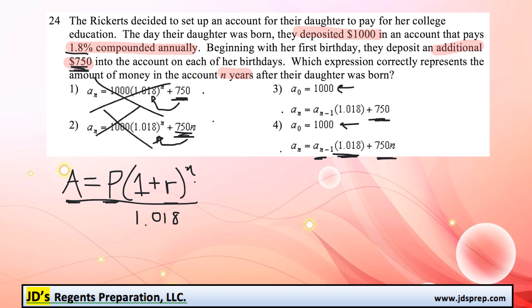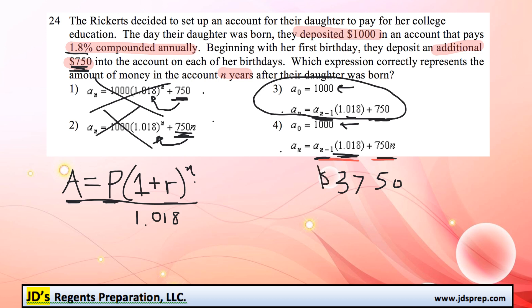So which one of these is correct? It's option number 3. In the formula we're multiplying the interest rate by the amount already in there from the previous year, and then adding $750. If you were adding $750 times the number of years, that means they're adding more than $750 each year. For example, in the fifth year it would imply they're adding $750 times 5, which is $3,750 in the fifth year — which we know is not true. They're only adding $750 each year. So option number 3 is the correct one.